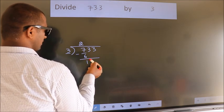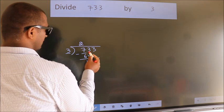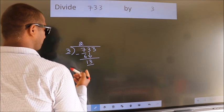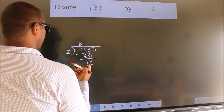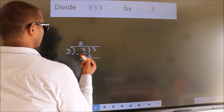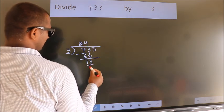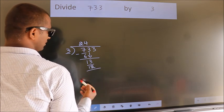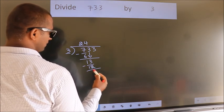After this bring down the beside number. So 3 down. So 13. A number close to 13 in the 3 table is 3 times 4 is 12. Now we subtract. We get 1.